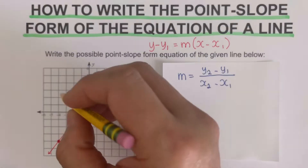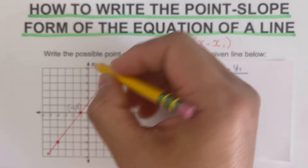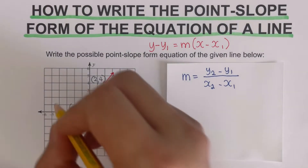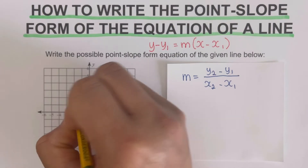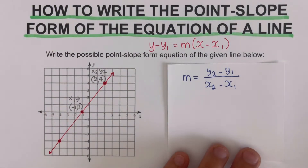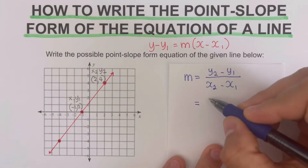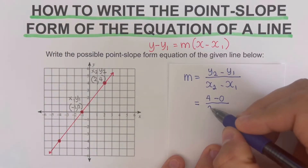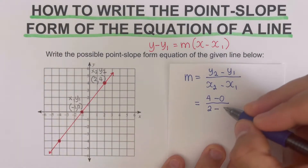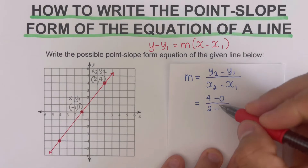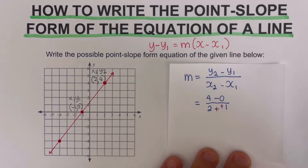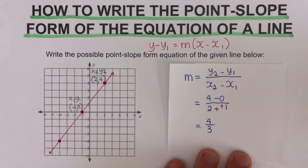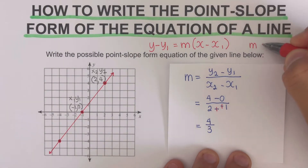Let's take the two points negative 1, 0 and 2, 4. We label them as x₁, y₁ and x₂, y₂ and plug in: y₂ minus y₁ is 4 minus 0, over x₂ minus x₁ is 2 minus negative 1. We change the subtraction of negative 1 to plus 1, giving us 4 over 3. So our slope m is 4 thirds.